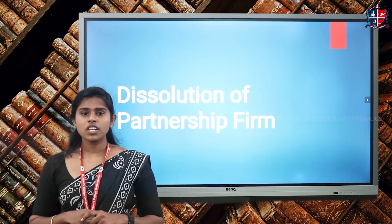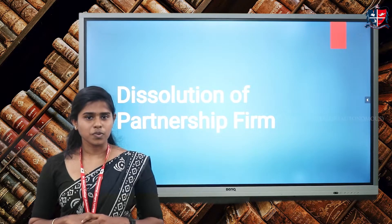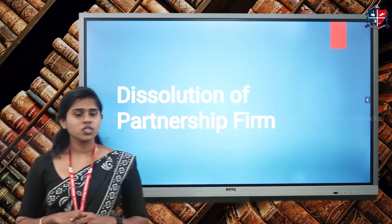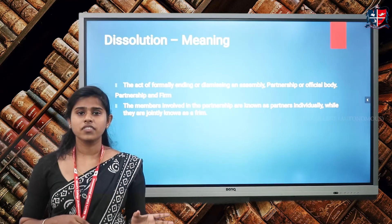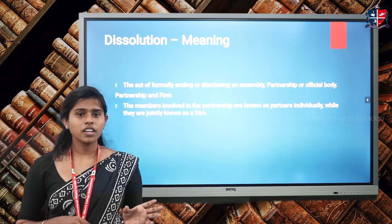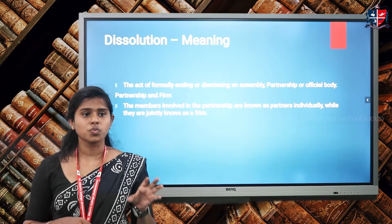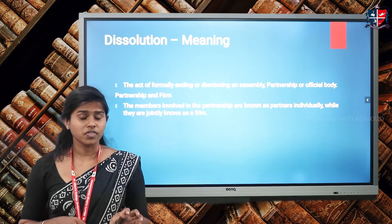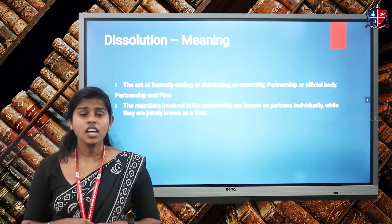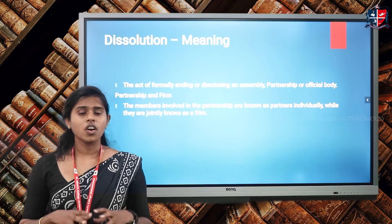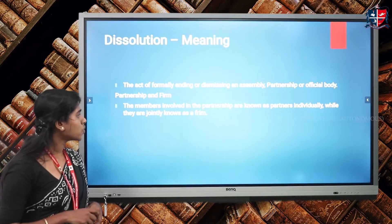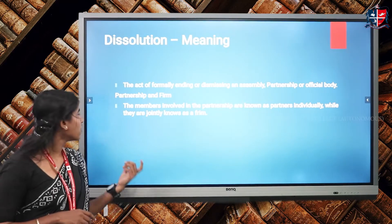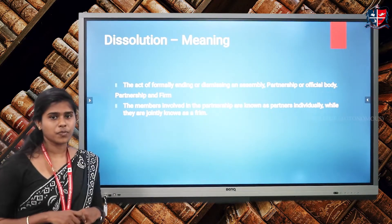Next we move to the topic dissolution of the partnership firm. We should have an understanding about what is the difference between a partner and a firm. A partner is an individual person who is working in a firm, and they together are collectively known as the firm. So the members involved in the partnership are known as partners individually, but jointly they are known as the firm.